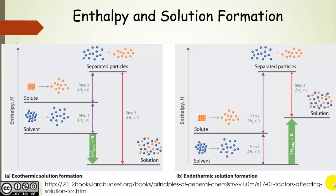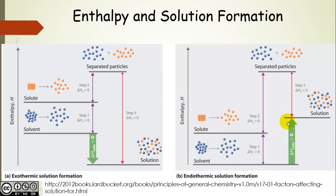Now let's look at endothermic solution formation. The first two steps are the same — we push apart solvent molecules from each other and solute particles from each other, ending up at this high-energy unstable state of separated particles. When we allow them to mix, a solution forms, and the ΔH for the third step is negative — energy is released upon solution formation. But it's not enough to bring the energy lower than that of the pure solute and solvent separately, so when we add these three steps, we still have a positive ΔH solution.